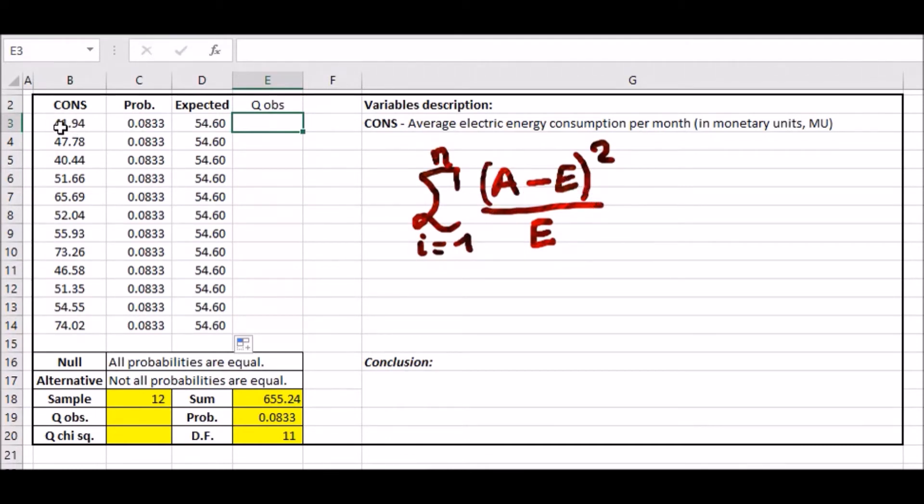Q obs simply uses this formula: A minus E squared divided by E. Plug in the formula: cons minus expected, all squared, so this minus that all squared. Put an extra bracket around it, bracket here, bracket there, divided by the expected, not this one, the one above D3. You'll get a value around 0 depending on how close the actual and expected values are. Drag it down and sum all the Q obs because that's what the sum says.